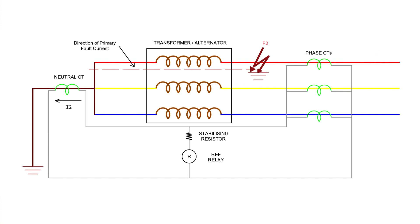When the fault occurs inside the protective zone say F2, then only current I2 exists and I1 is neglected. The current I2 passes through the earth fault relay. The earth fault relay operates only for the internal fault of the protective zone.